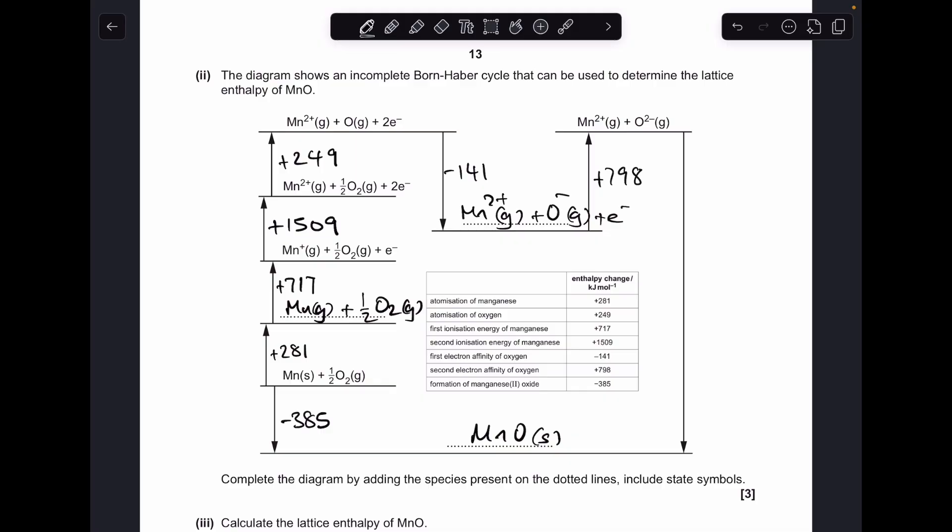And the long arrow down the right-hand side, that's the lattice enthalpy, gaseous ions to one mole of ionic lattice. So we'll just put X because that's what we're going to calculate.